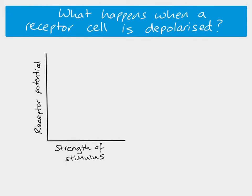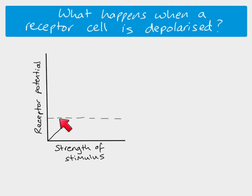This graph shows stimulus strength on one axis and the size of the receptor potential on the other - there are no units, just showing relative changes. When there's no stimulus, the receptor potential is zero, but as you increase the stimulus, the receptor potential increases, meaning the amount of depolarization increases. Just as with action potentials, receptor membranes have a threshold level.